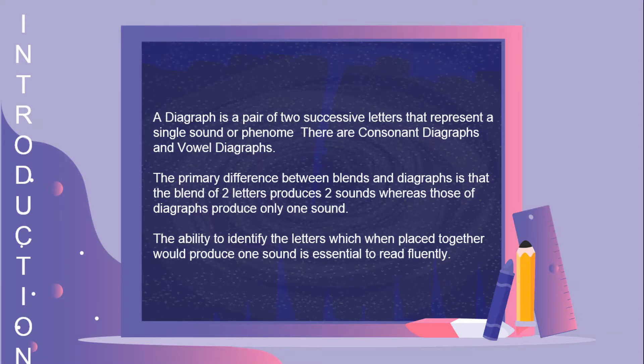A diagraph is a pair of two successive letters that represent a single sound or phoneme. There are consonant diagraphs and vowel diagraphs. The primary difference between blends and diagraphs is that a blend of two letters produces two sounds, whereas a diagraph produces only one sound. The ability to identify letters which, when placed together, produce one sound is essential to reading fluently.